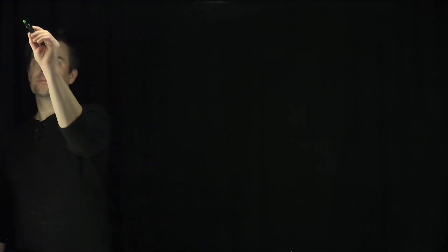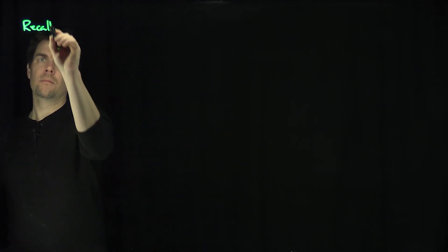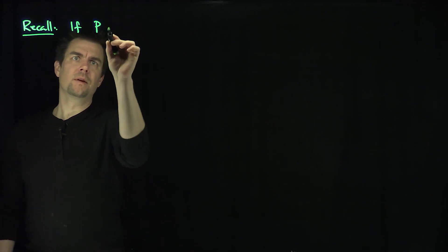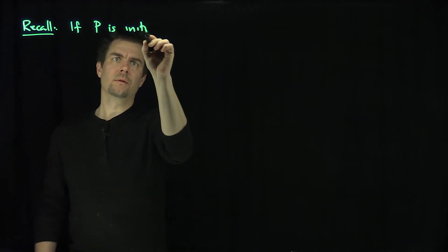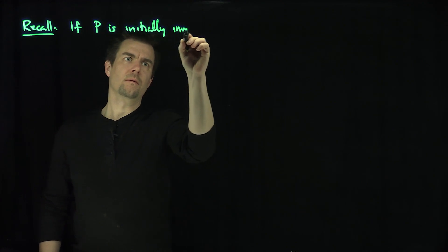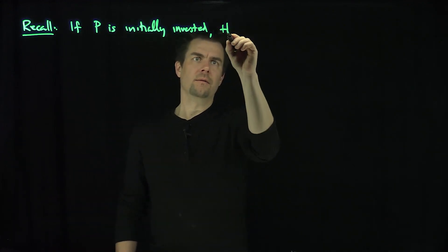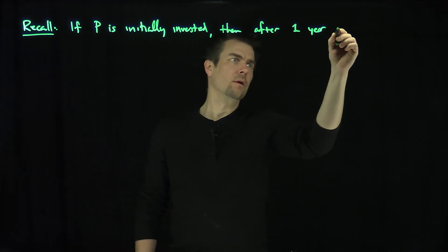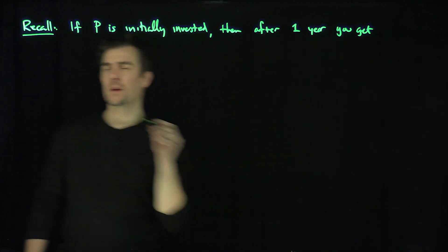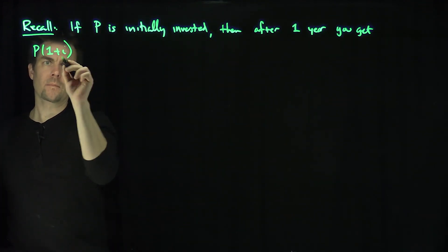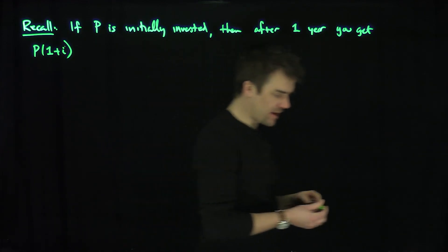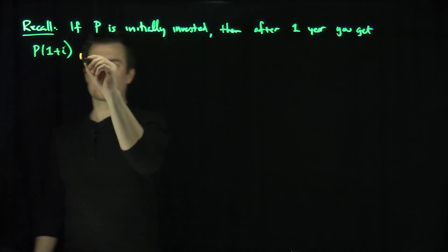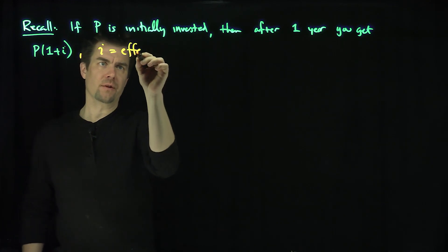Hello students. In this video we'll discuss the relationship between annual rates of interest and annual rates of discount. Recall, if P is initially invested, then after one year you get P times (1 + i), where i is the effective annual rate of interest.